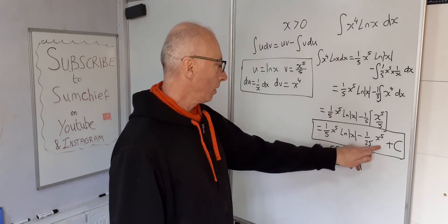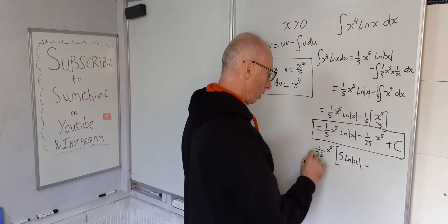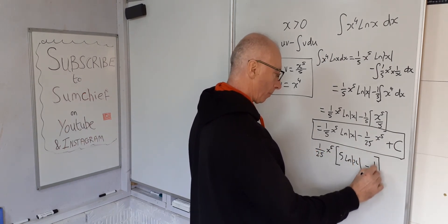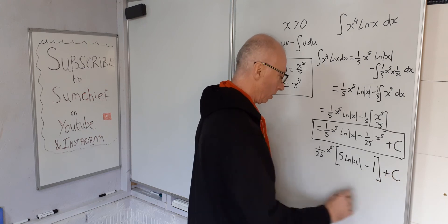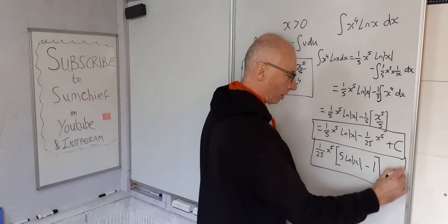Minus 1 over 25 x to the 5. So that just becomes, because we've already got it, minus 1. Plus c. Okay. That is also the equivalent answer.